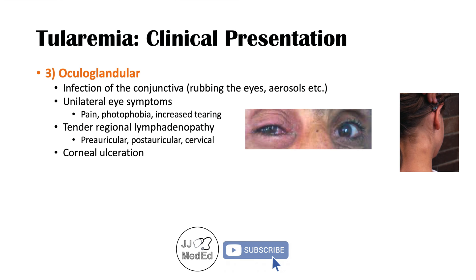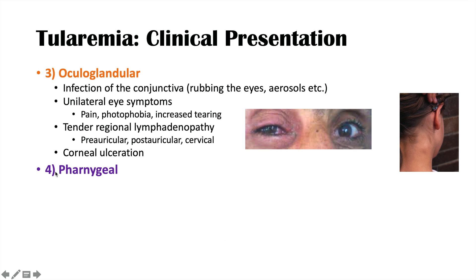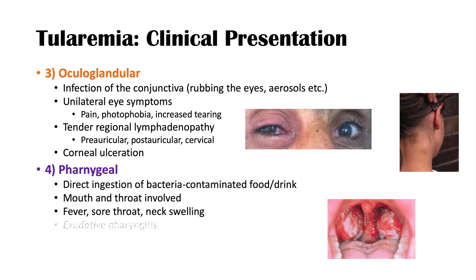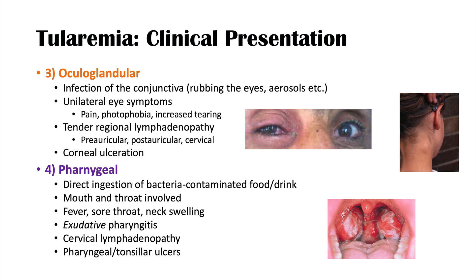The infected eye may also have corneal ulceration. The fourth form is pharyngeal tularemia, which occurs through direct ingestion of contaminated food or drink. The mouth and throat are involved, presenting with fever, sore throat, and neck swelling. We typically see exudative pharyngitis — inflammation of the throat with white exudate — along with cervical lymphadenopathy and pharyngeal or tonsillar ulcers.